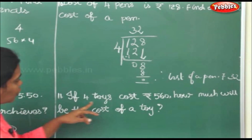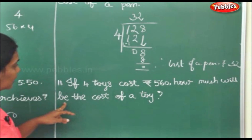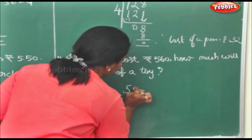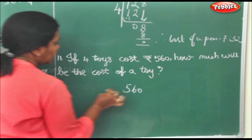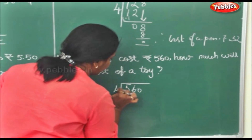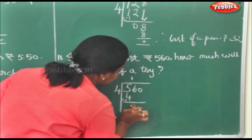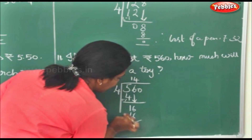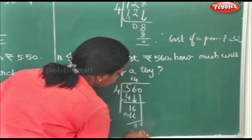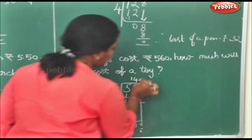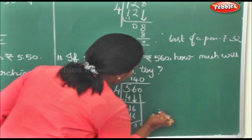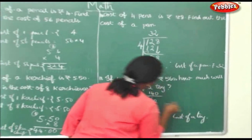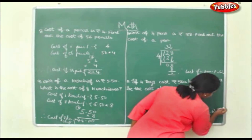If 4 toys cost rupees 560, how much will be the cost of a toy? Divide 560 by 4. 4 into 5 is 1 remainder 1, bring down 6, 4 into 16 is 4, bring down 0. Therefore cost of a toy is equal to rupees 140.